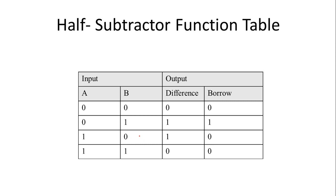The truth table is pretty simple — it's just like a half adder. It has two inputs A and B, and two outputs: the first output is difference and the second output is borrow. If we need to take a borrow then borrow is one; if we do not need to take a borrow then borrow is zero.